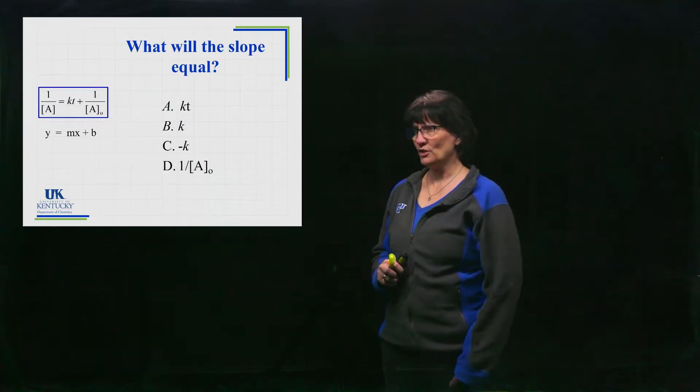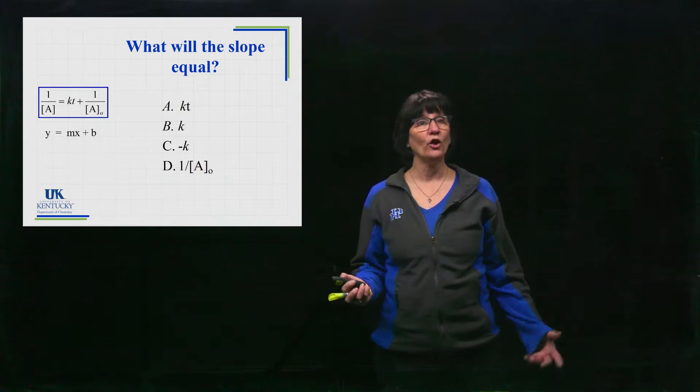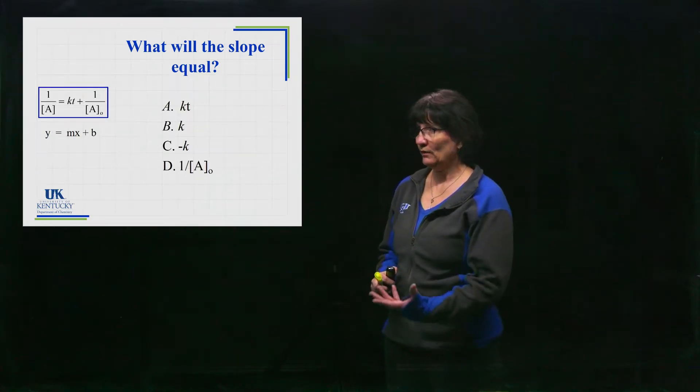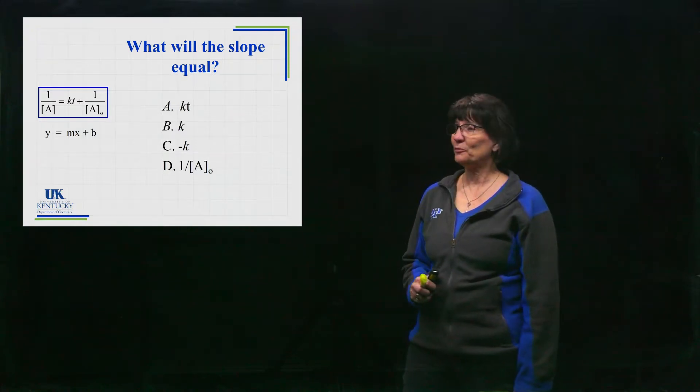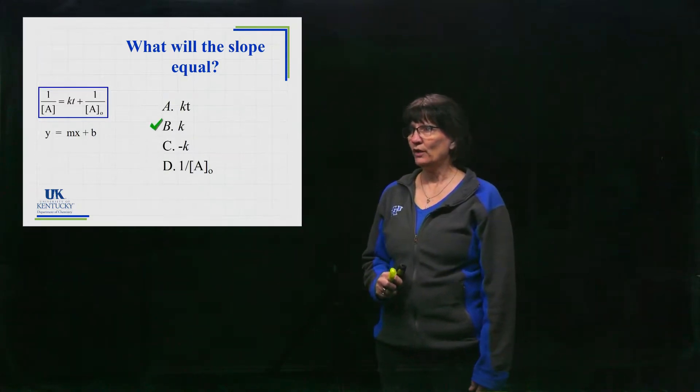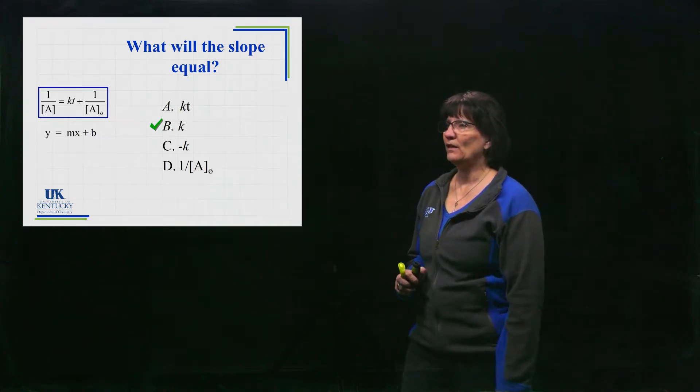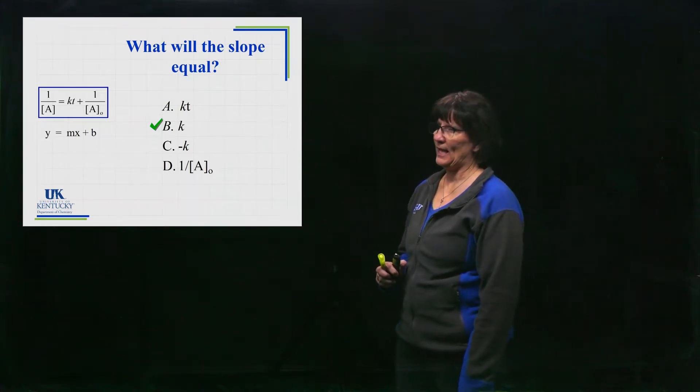But let's say we plotted this and it was a straight line. My question for you is, what will the slope equal to of that graph? Well, if you can read what y equals MX plus B in the matchup of M, the slope is going to be the value of the rate constant K.